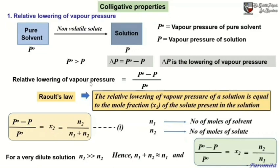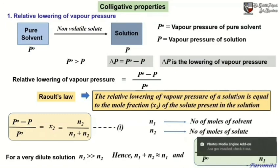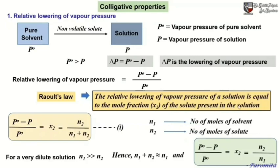The relative lowering of vapor pressure equals (P0 minus P) divided by P0, that is delta P divided by P0. According to Raoult's law, this (P0 minus P)/P0 equals x2, where x2 is the mole fraction of the solute. Raoult's law states that the relative lowering of vapor pressure equals the mole fraction of the solute present in the solution.